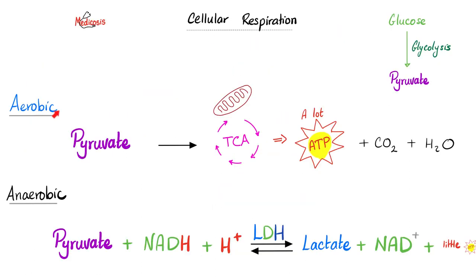If you have oxygen, aerobic, you get tons of energy, carbon dioxide, and water. But if you do not have oxygen, anaerobic, you get lactate or lactic acid and little ATP. The enzyme that converts pyruvate to lactate or lactate to pyruvate is the lactate dehydrogenase enzyme.